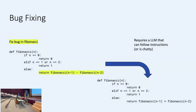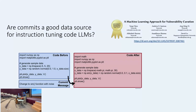For bug fixing, you can't use a base code generation model because it requires the model to be able to follow instructions — it needs instruction fine-tuning. If you were to build something like this, you'd need a dataset with a lot of bugs and fixes, and some text telling what was fixed. One good approach is to look at commits, because commits have code before, code after, and a commit message which is essentially the instruction.